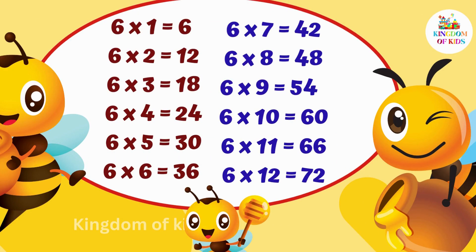6 1's are 6. 6 2's are 12. 6 3's are 18. 6 4's are 24. 6 5's are 30. 6 6's are 36. 6 7's are 42. 6 8's are 48. 6 9's are 54. 6 10's are 60. 6 11's are 66. 6 12's are 72.